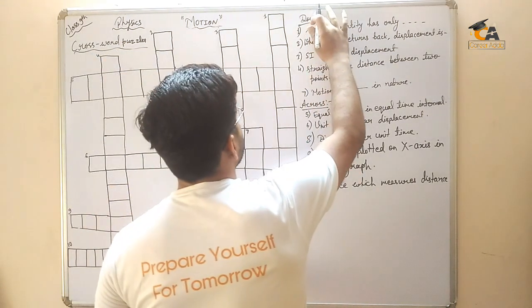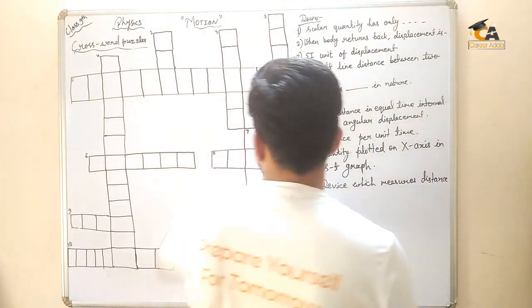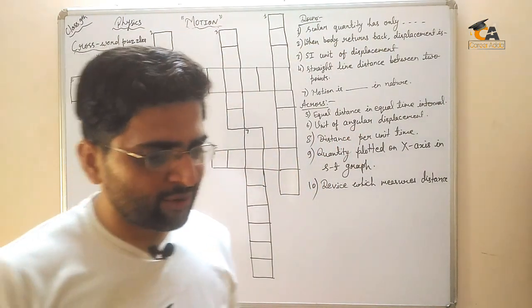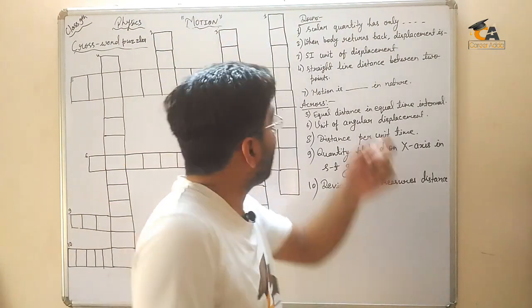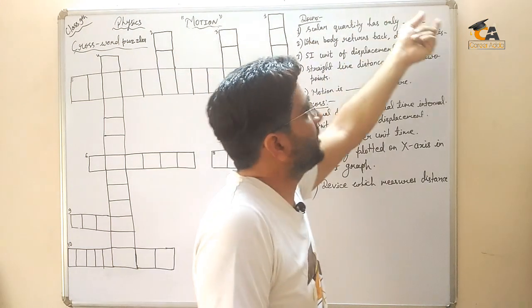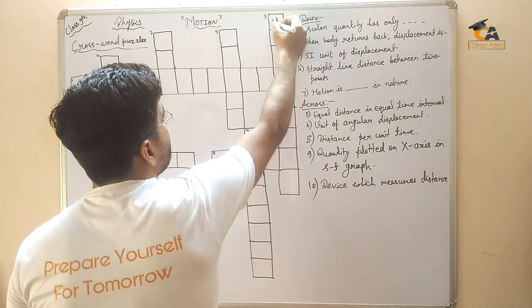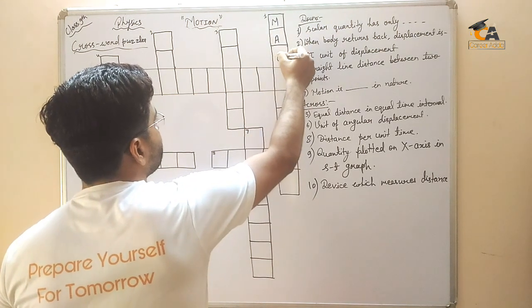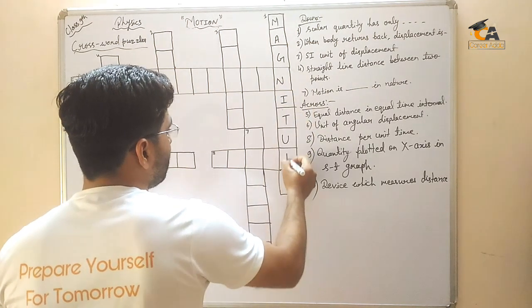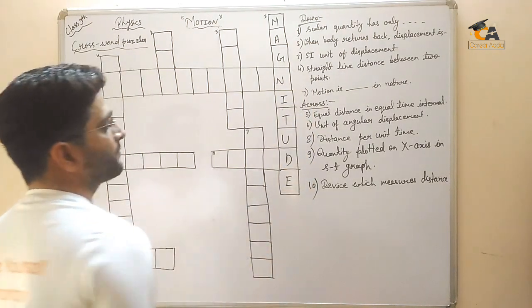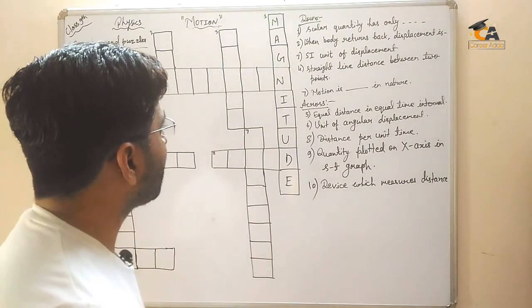Down. First of all, down side. Scalar quantity has only magnitude. Which has only magnitude. So where are you? This one. Here we will write magnitude. M-A-G-N-I-T-U-D-E. Magnitude has only. First question. Let's start. Next question.